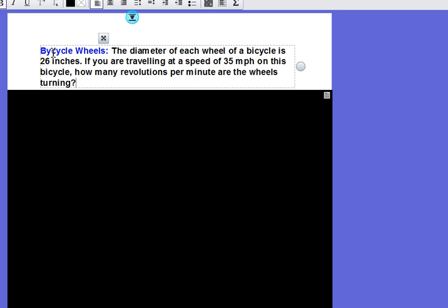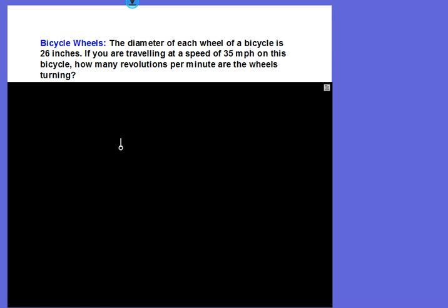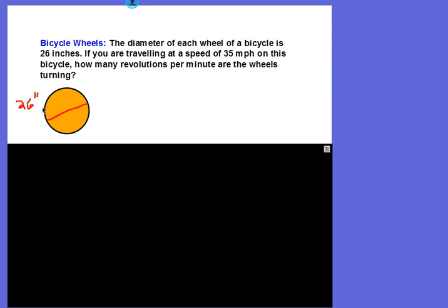In this one we're dealing with a bicycle. Let's see if I can spell bicycle correctly. That would be a good start. I guess that's why I'm the math teacher, not the English teacher. We have a bicycle wheel. The diameter of the wheel is 26 inches. That obviously means the radius is 13.